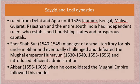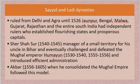Then came Sher Shah Suri, a famous king who ruled from 1540 to 1545. He started as a manager of a small territory for his uncle in Bihar but eventually challenged and defeated the Mughal emperor Humayun and introduced efficient administration. Then came Akbar — Akbar the Great — who ruled from 1556 to 1605. From a young age he had to take over the responsibility of ruling the kingdom. He consolidated the Mughal empire and followed the model implemented by Sher Shah Suri, and was considered more kind than his predecessors.